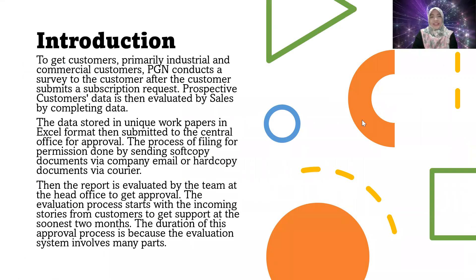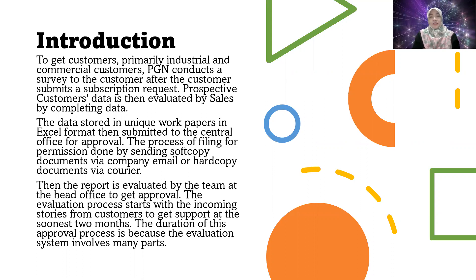For introduction, to get customers, primarily industrial and commercial customers, DGN conducts a survey of customers after the customer submits a subscription request. Prospective customer data is then evaluated by sales by completing data. The data is stored in a working paper in Excel format, then submitted to the central office for approval. The process is done by sending soft copy documents via company email or hard copy documents via courier.